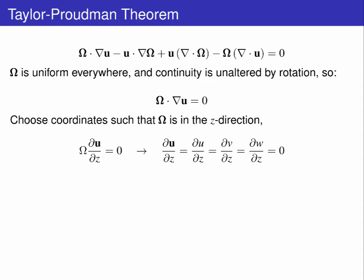Let's choose our coordinates such that omega is in the z direction, meaning the dot grad operator becomes the vertical gradient of u. This expands to du dz equals dv dz equals dw dz equals 0.